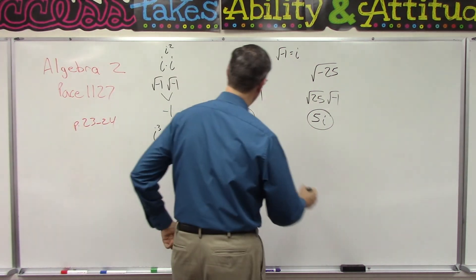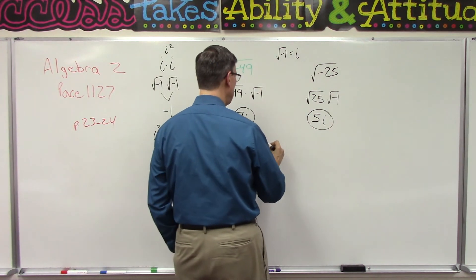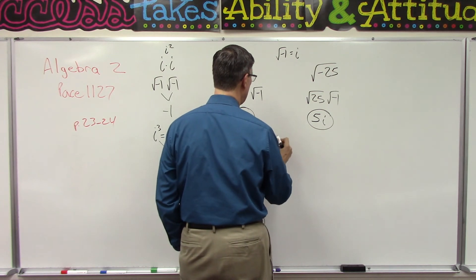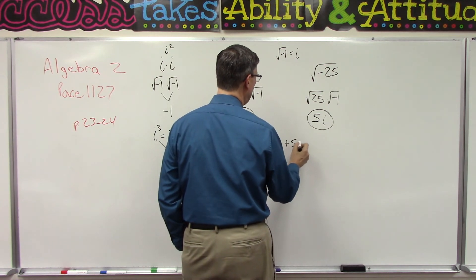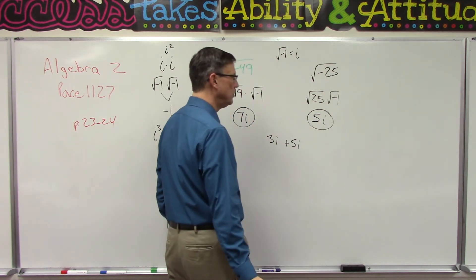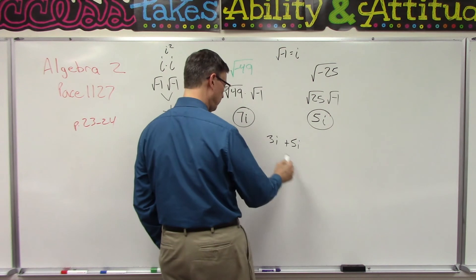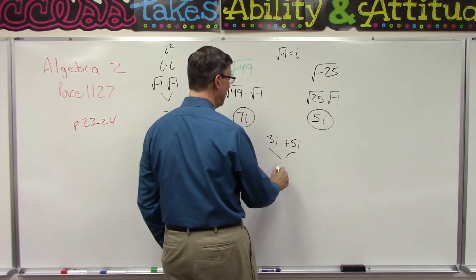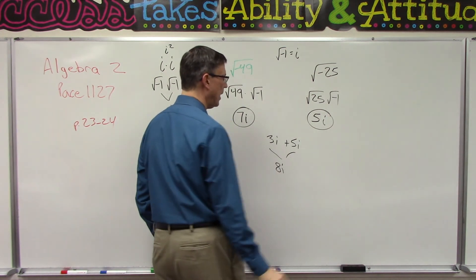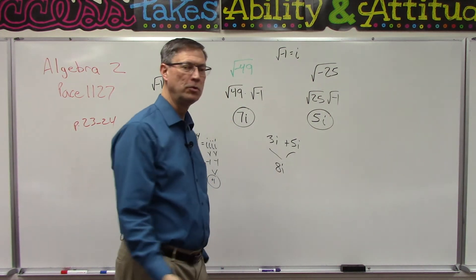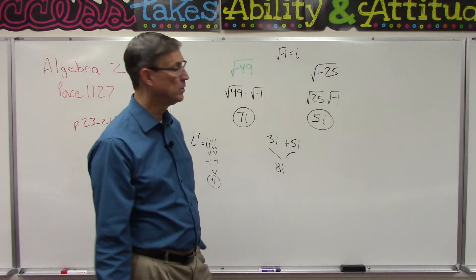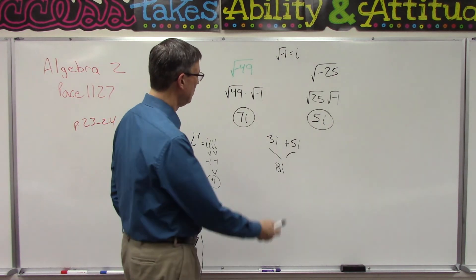What if we had a problem where we had 3i plus 5i? Can we do something with that? Yes — we can combine that and get 8i. It's kind of like what we were doing with x's and a's and other variables; it's just that we're doing it now with i.